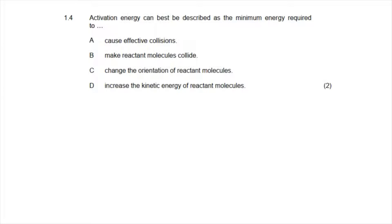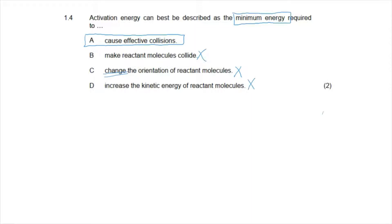Question 1.4 asks how activation energy can best be described. Activation energy is the minimum energy required to cause a collision to be effective — to give particles enough energy to overcome the electrostatic forces of repulsion. The correct answer is option A. Option B is incorrect because molecules always collide as they are constantly in motion. Option C is incorrect because only a catalyst can effectively change orientation. Option D is also incorrect because activation energy is not simply the minimum energy required to increase reactant energy.